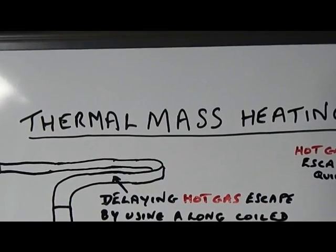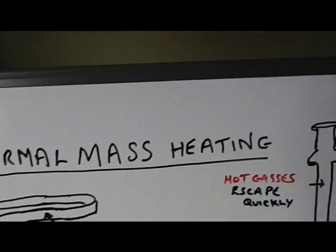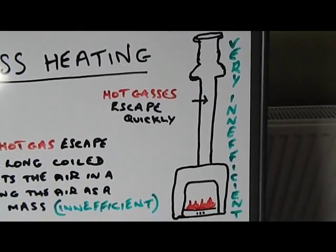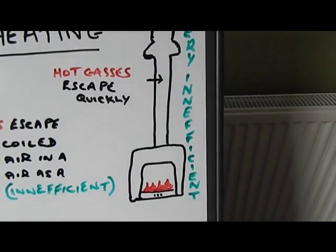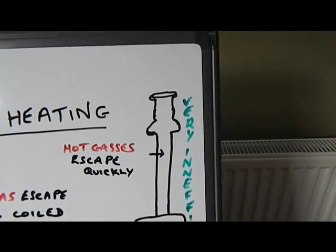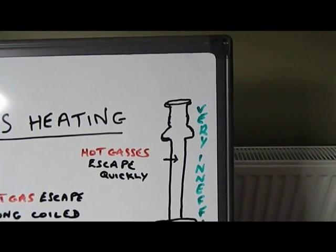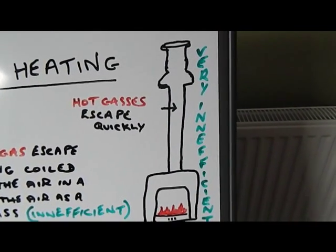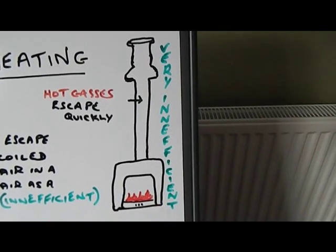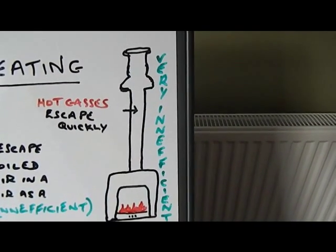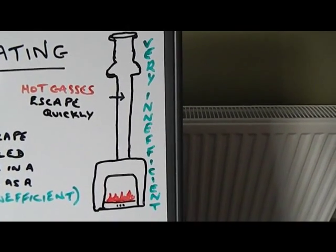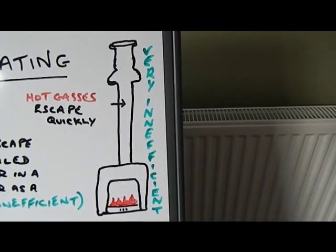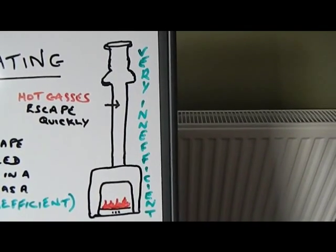Now, starting off the original fireplace, which this is a schematic of, is an open fire with a chimney that goes straight up and out. And as it's marked here, hot gases escape quickly straight up the flue. It's a very inefficient way of heating any space,